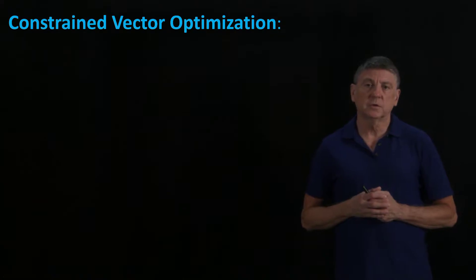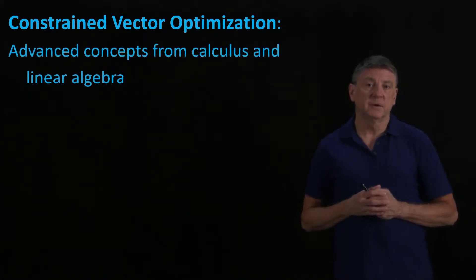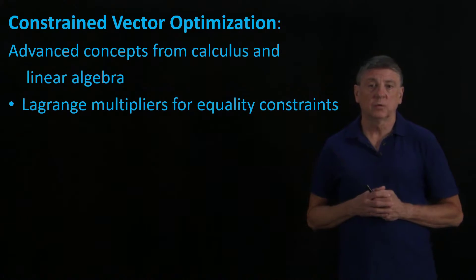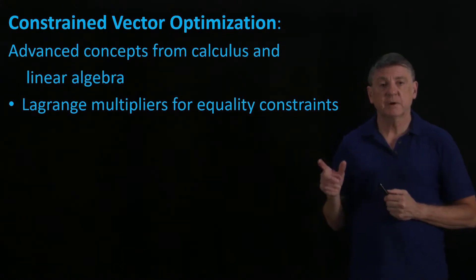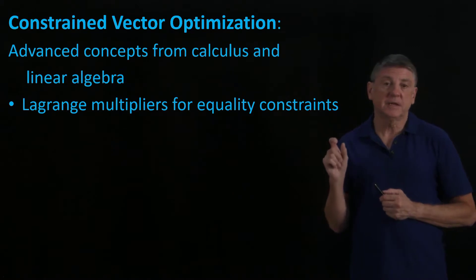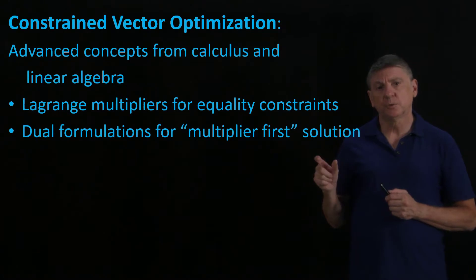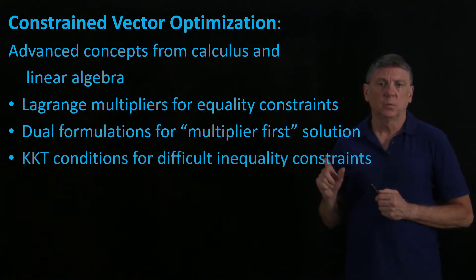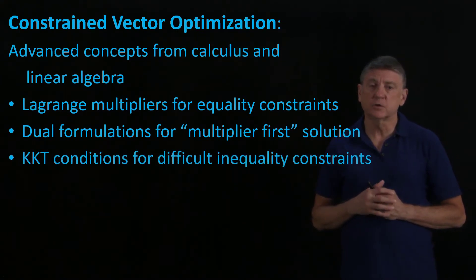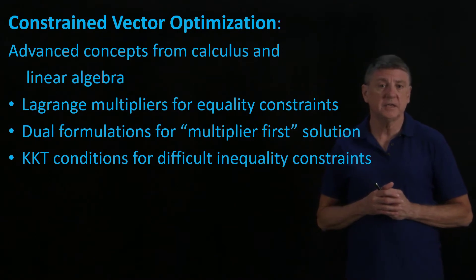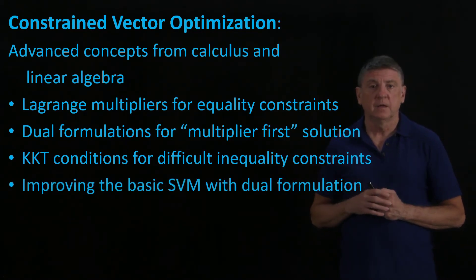The final part of this course will look at constrained vector optimization. This will involve some advanced concepts. We're going to use Lagrange multipliers when we constrain a problem to say that something has to be equal to something else. We'll use something called a dual formulation that will let us solve these problems much faster. And we'll look at the Karush-Kuhn-Tucker or KKT conditions that will let us handle inequalities, where one value is greater than another value. This will let us improve the basic support vector machine and really tell us how it's implemented in practice.